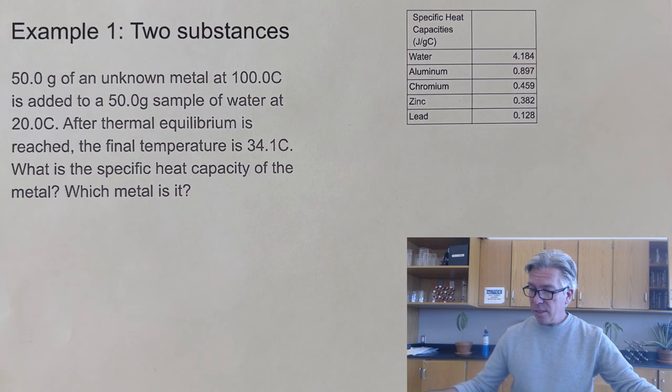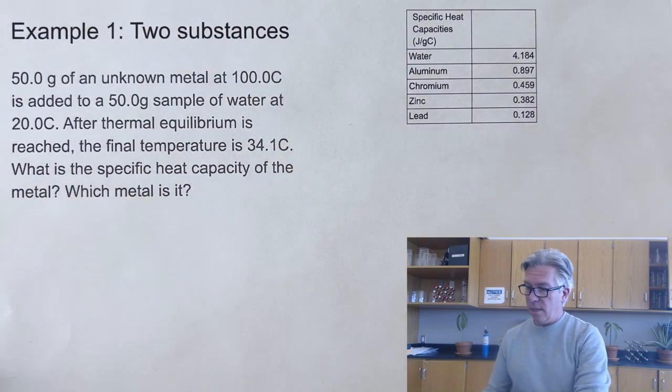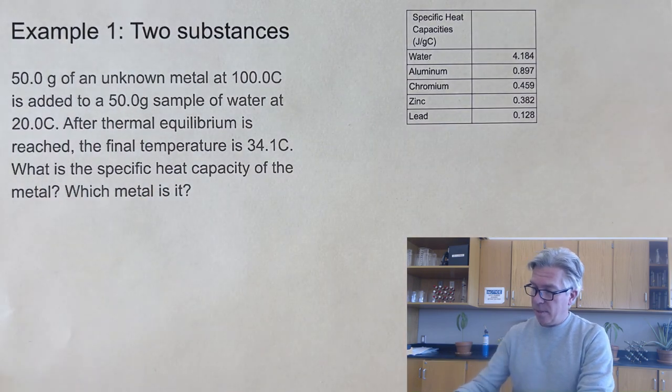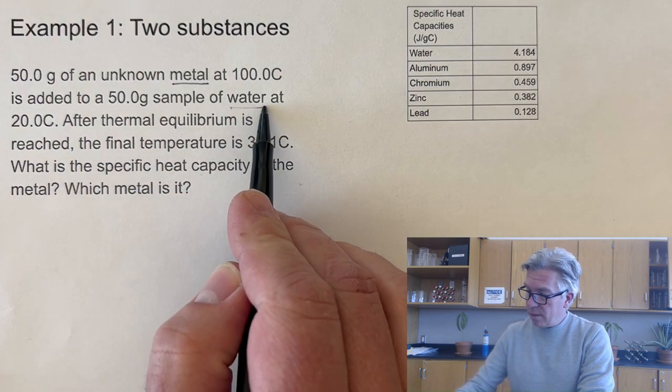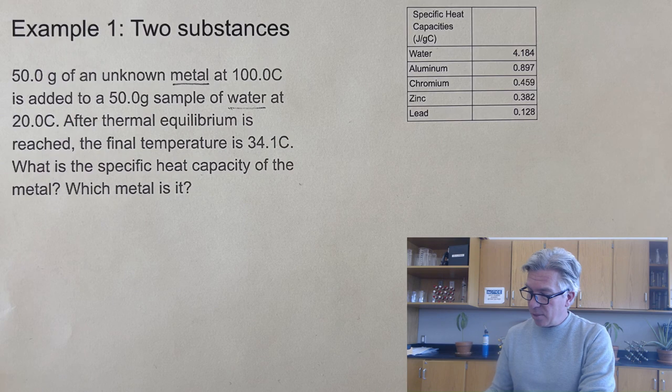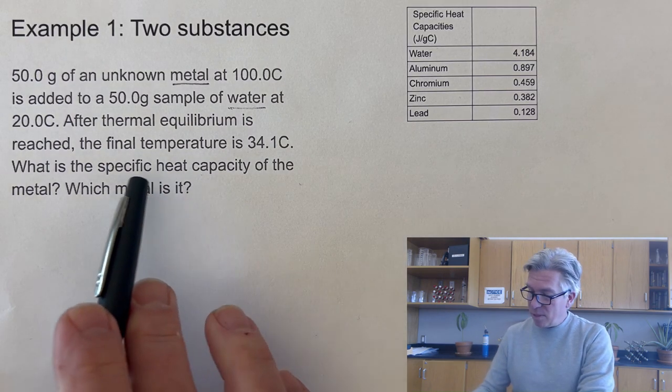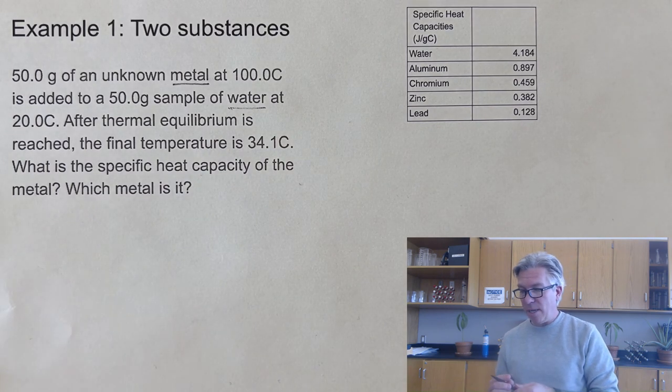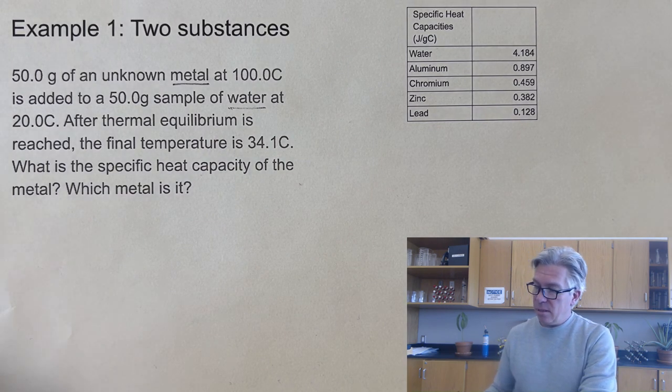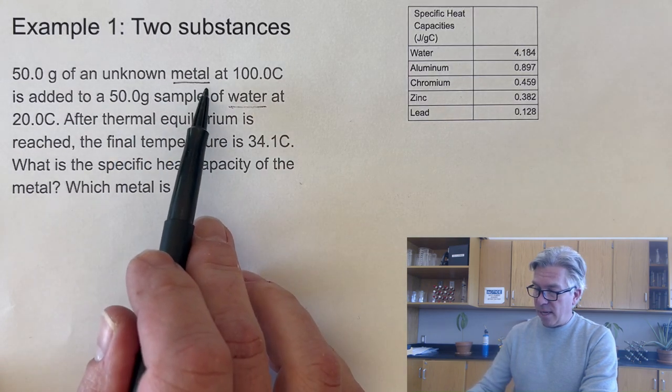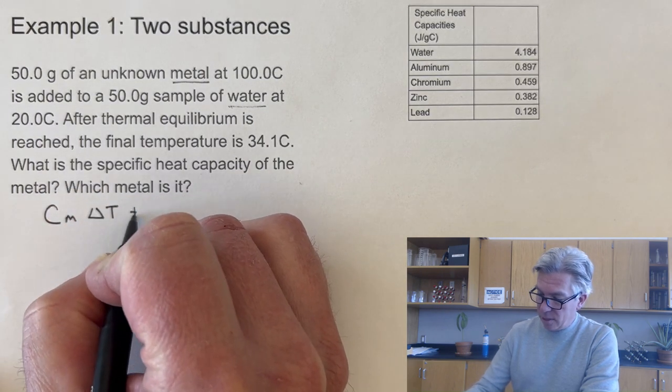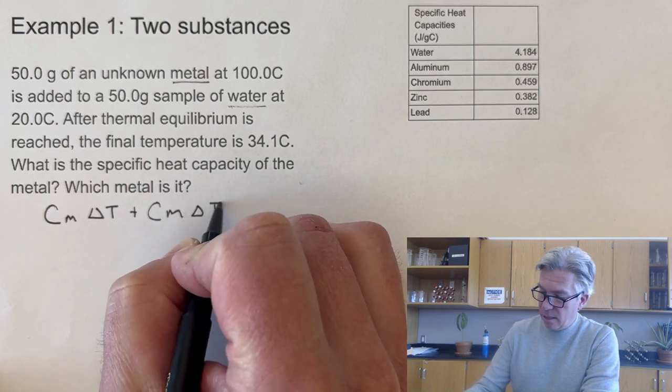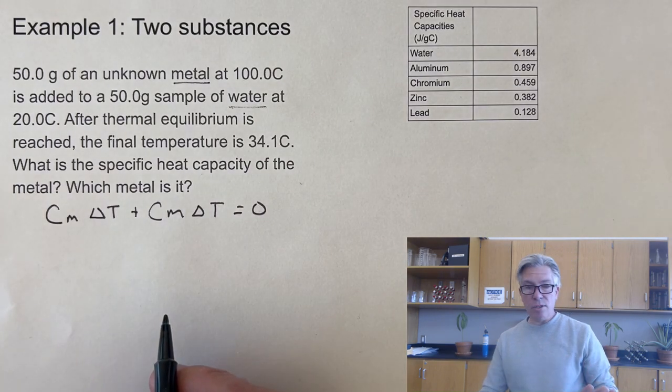In our first example, 50 grams of an unknown metal at 100 degrees is added to a 50 gram sample of water at 20 degrees. After thermal equilibrium is reached, the final temperature is 34.1. What's the specific heat capacity of the metal? Which metal is it? So I can see I have two samples and some temperature change is going on.